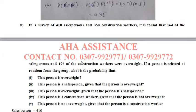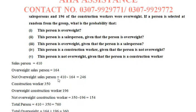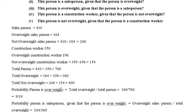This is part B in a survey of potent salesmen and 350 construction workers. It is found that 164 of the salesmen and 196 of the construction workers were overweight. Now you have to find out that this person is overweight or this person is a salesman given that person is overweight. So you have given different conditions and on that basis you have to find out your probabilities.